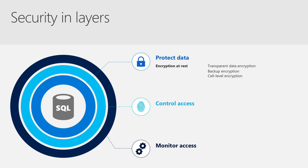First, let's talk about the innermost layer — protecting data. This is about encrypting data so that it's protected from different threats as it moves across your application stack. For example, encryption at rest is a very common requirement for customers who want to protect their data in case the files or disks are stolen. SQL Server enables you to protect your data at rest with varying degrees of granularity using features like transparent data encryption, backup encryption, or cell level encryption. I want to highlight transparent data encryption in particular because it's so commonly used. This feature encrypts your entire database — the data, log, and backup files — without requiring any application changes. It works on Linux just like it does on Windows.